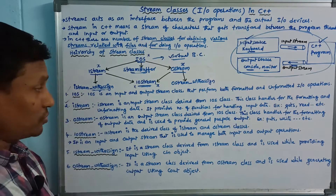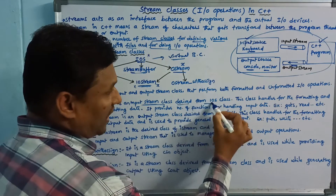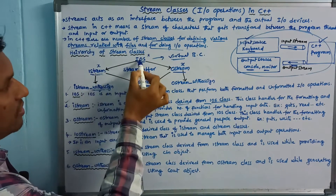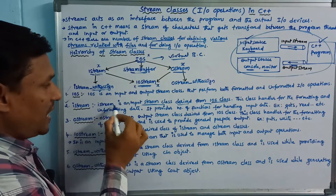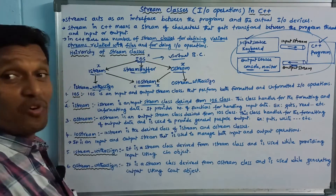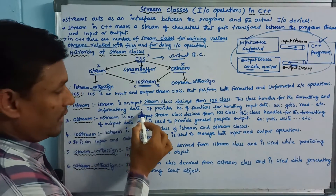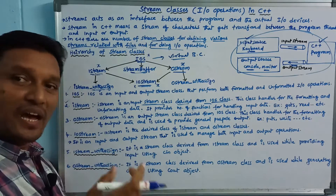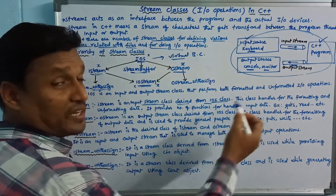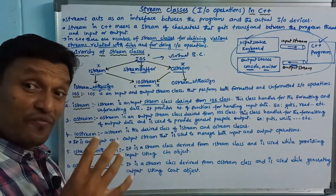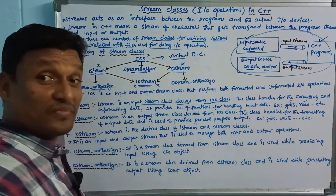Istream is an input stream class derived from the IOS class. It handles both formatted and unformatted input data. It provides functions for handling input data, for example: get, read, etc.